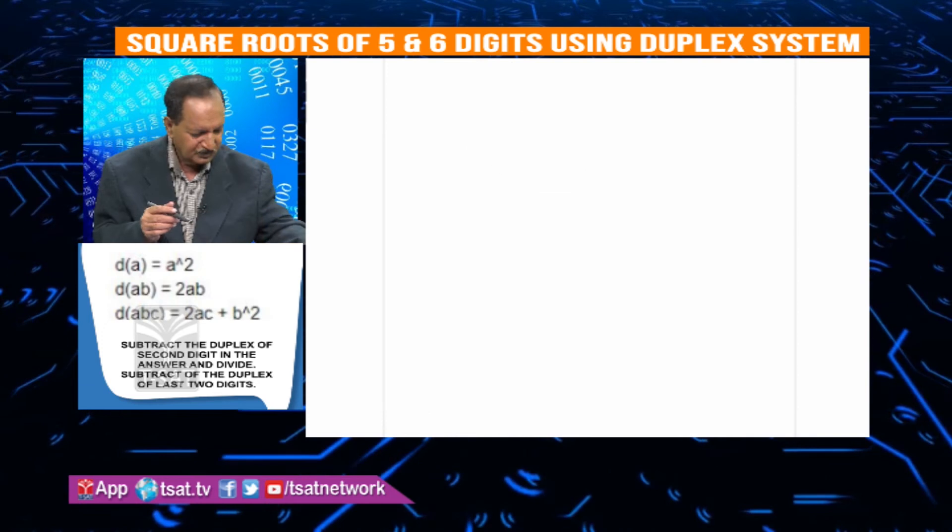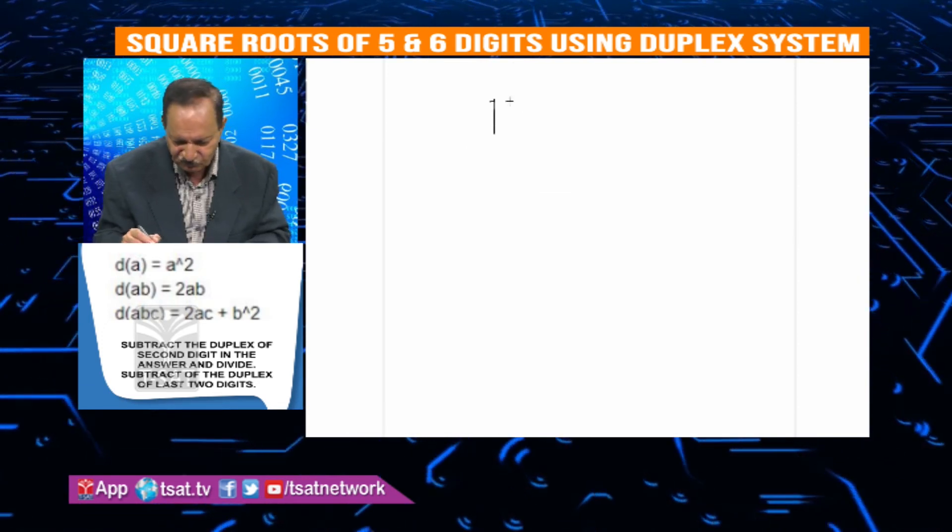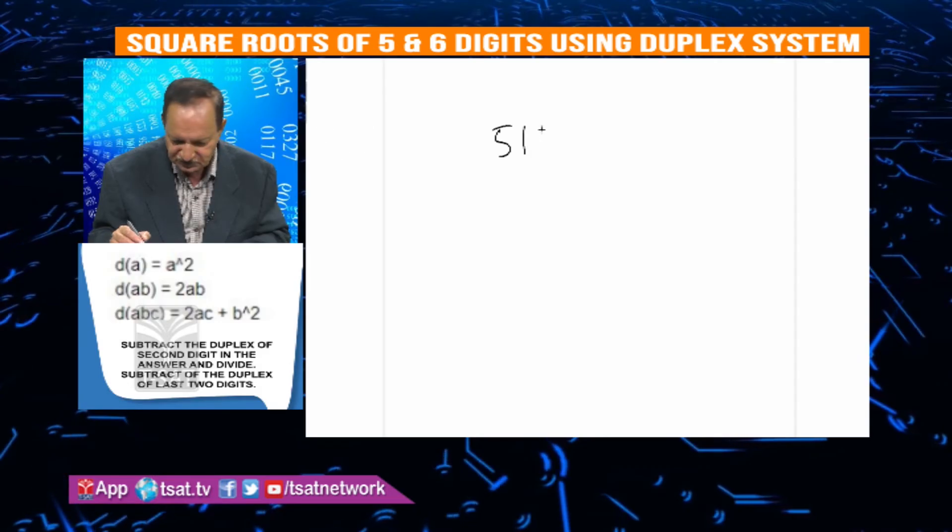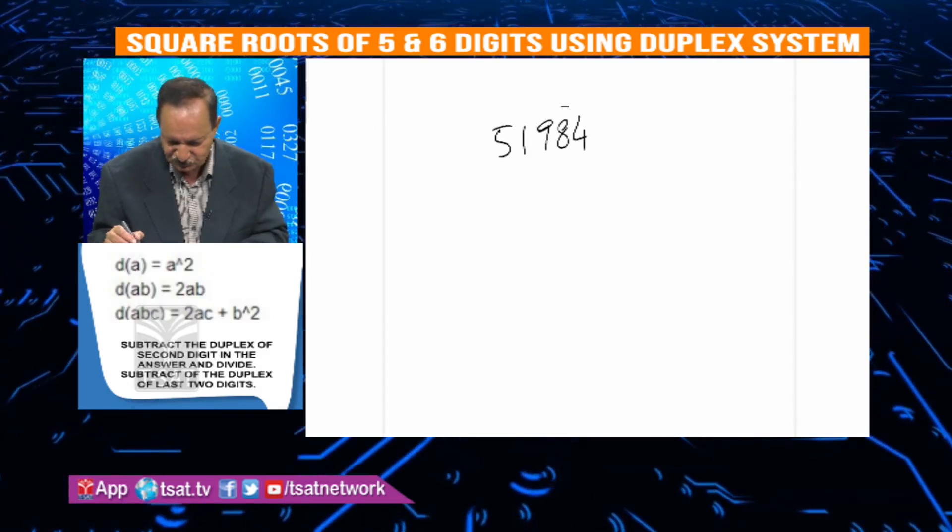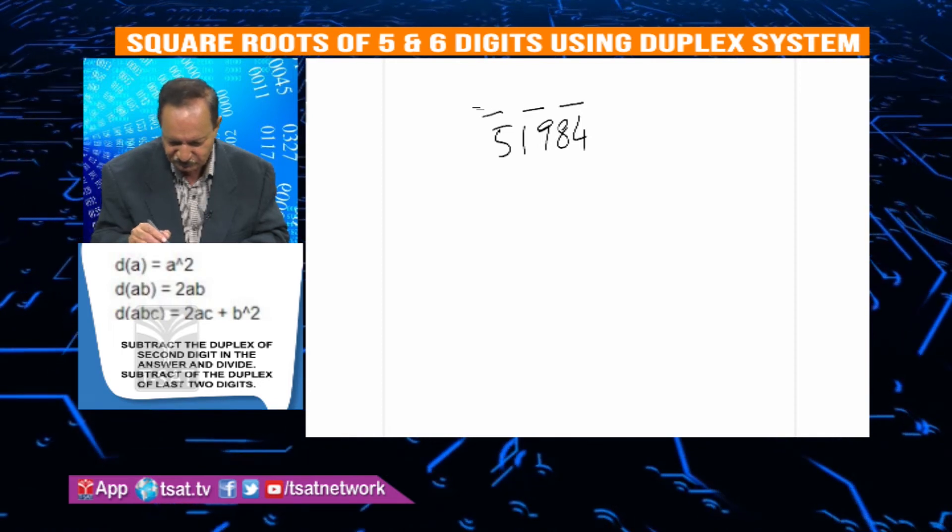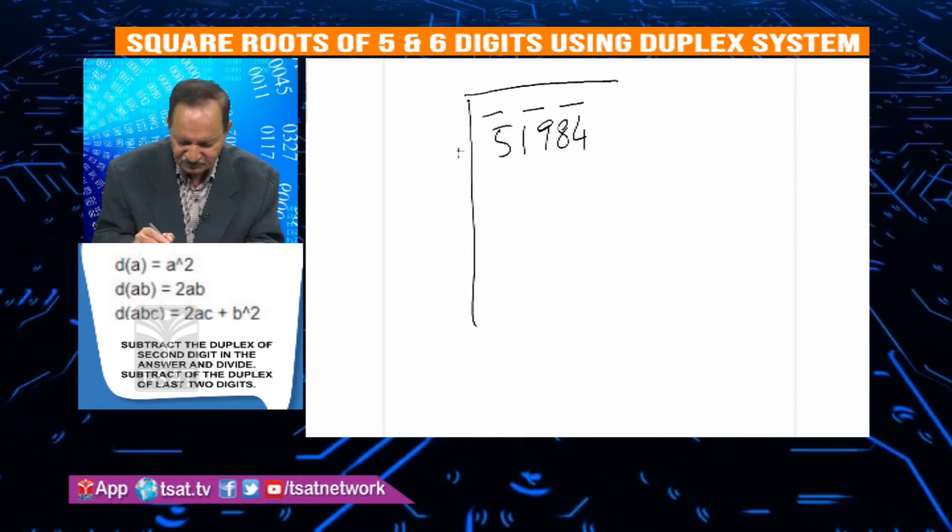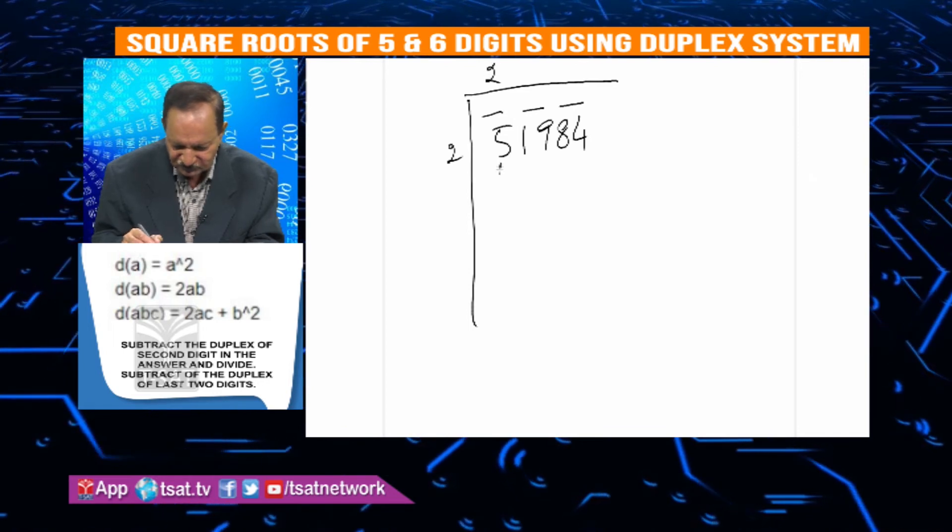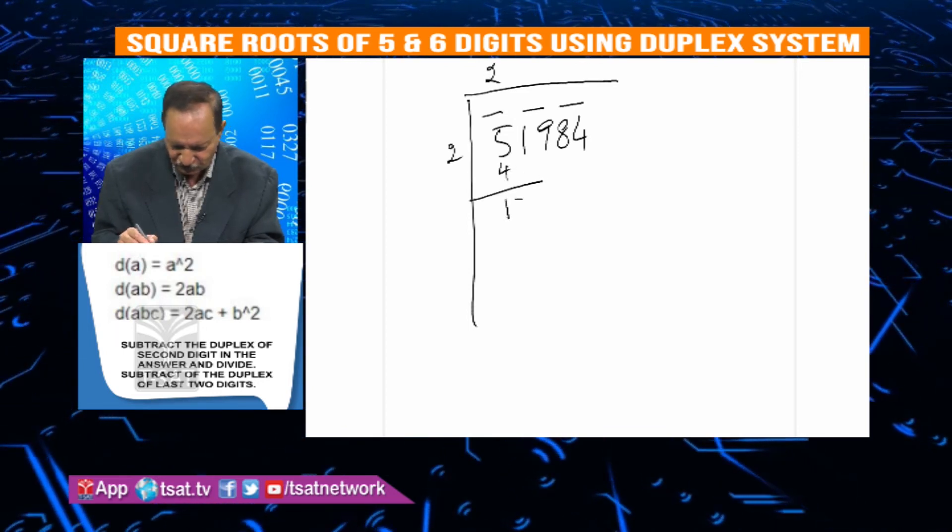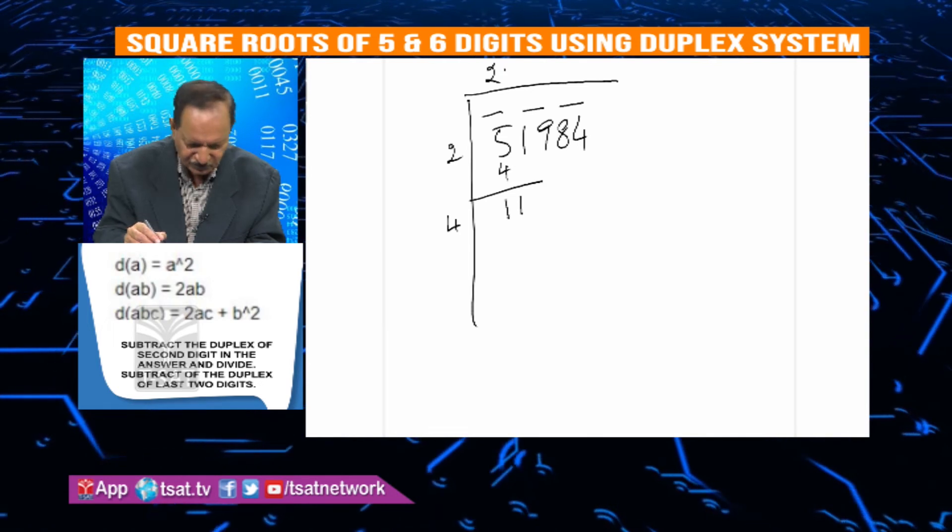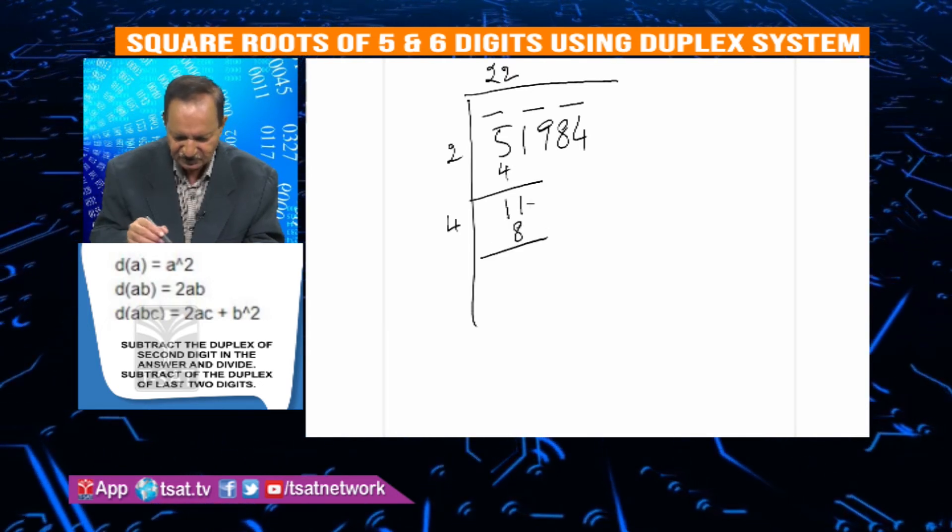Now we will practice 6 digits. Let's try 519484. First, group the numbers: 84 is one group, 94 is another group, 51 is the third group. Three groups means 3 digits in the answer. First step: square root of 5 is approximately 2, so 2 is the first digit. 4 times 2 is 8, subtract to get 1. Bring down 94 to get 194.